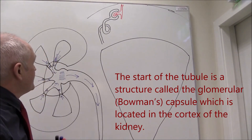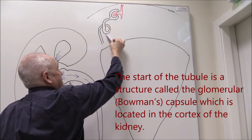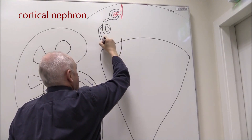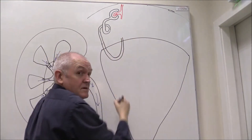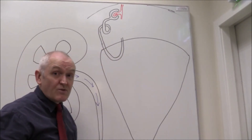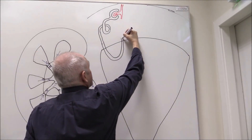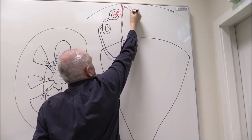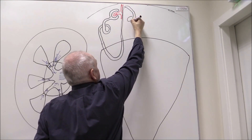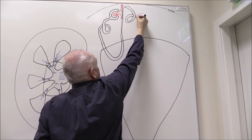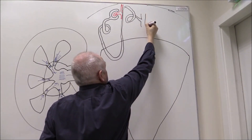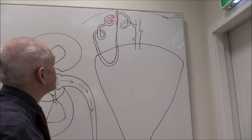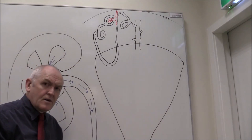Then in the case of this cortical nephron, after the first convoluted tubule, there's going to be a loop. But the loops are relatively small in cortical nephrons, and actually about 80 to 85 percent of nephrons are these cortical type. The ascending loop of Henle then passes very close to the afferent arteriole. Then there's another convoluted tubule, and then that drains into one of the collecting ducts — many nephrons are going to drain into a collecting duct.